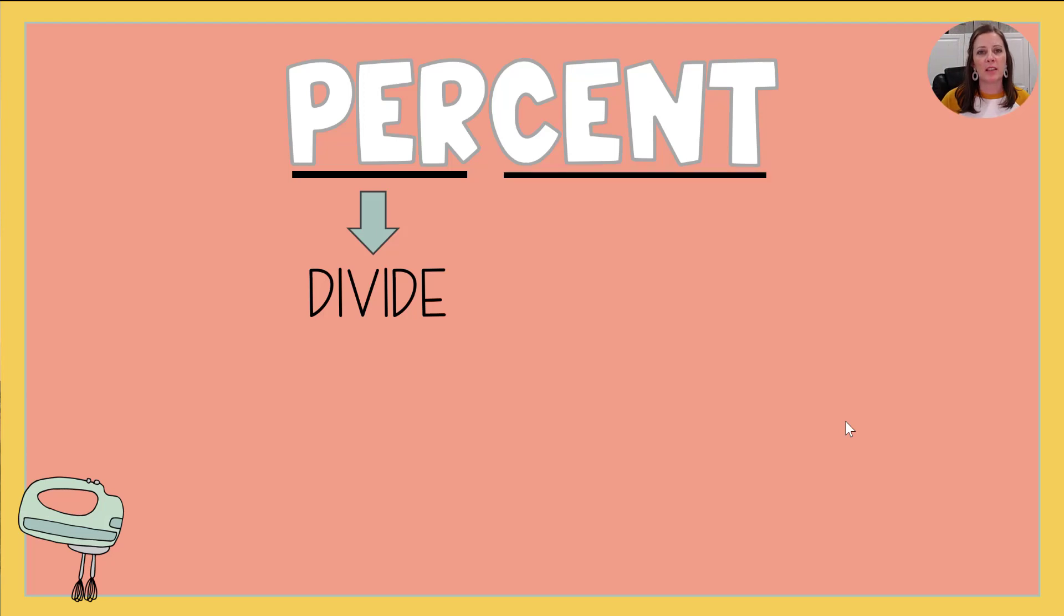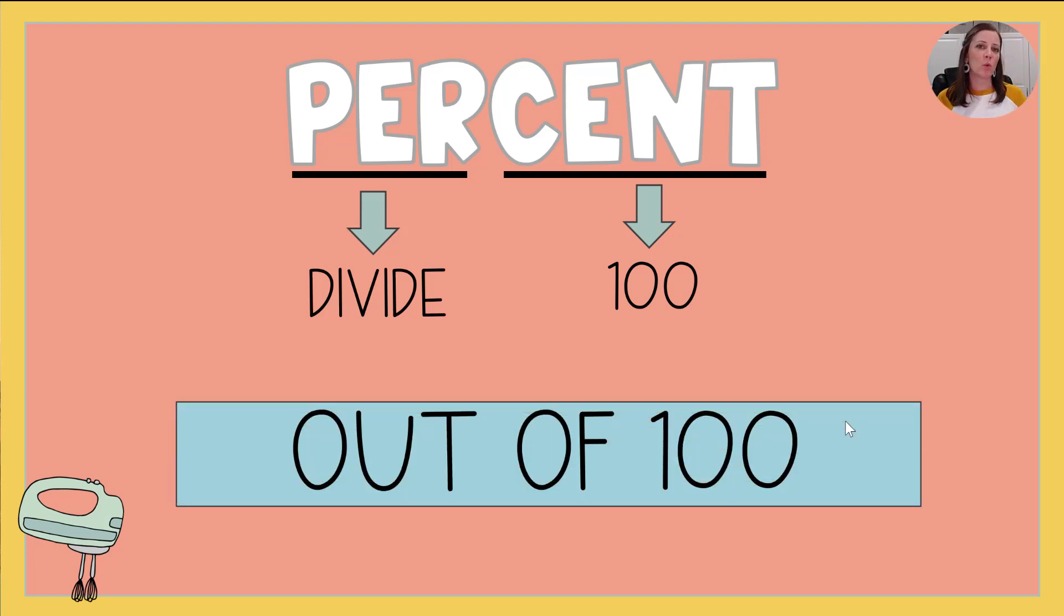But what about cent? Have you ever heard a word that has cent in it? You might have heard of century which is 100 years or cent as in how many cents make a dollar? 100. And so cent means 100. So percent means to divide by 100 or out of 100.